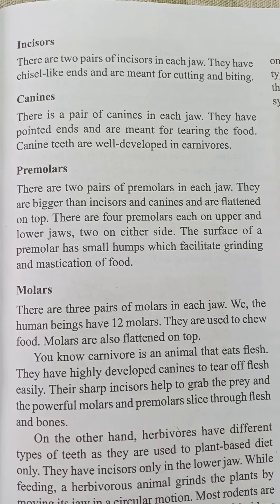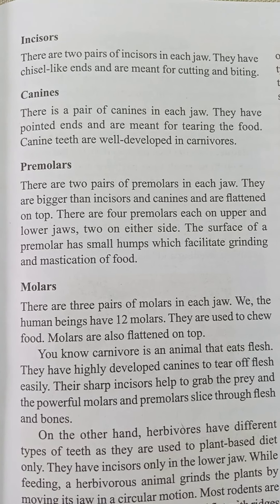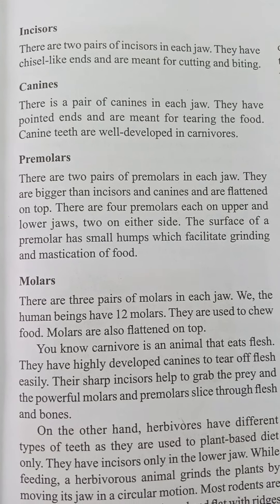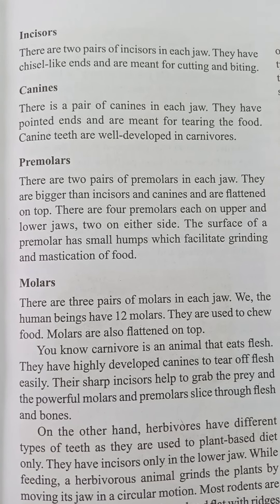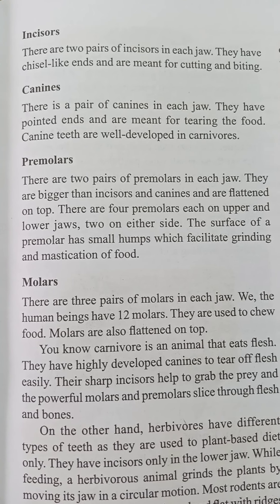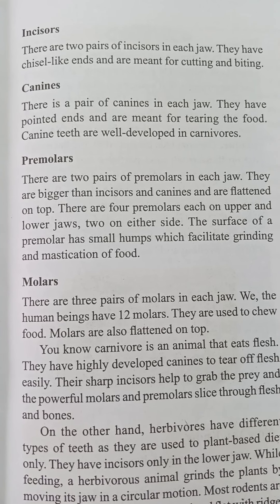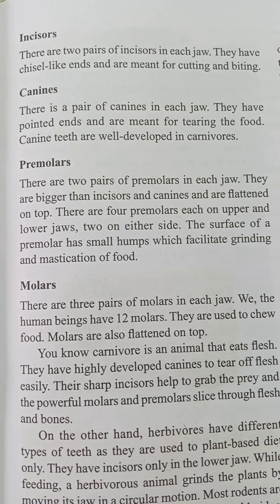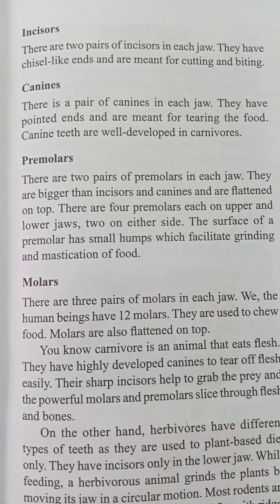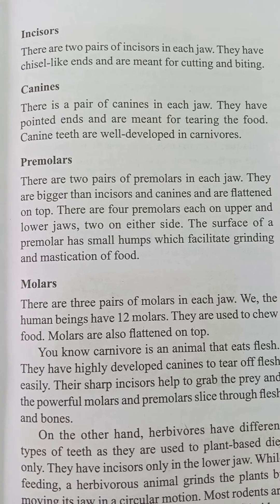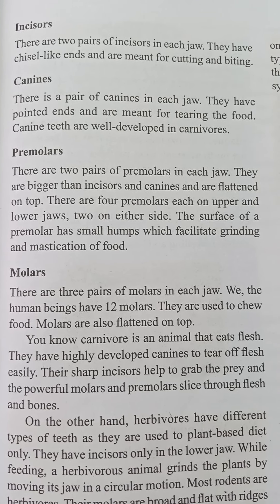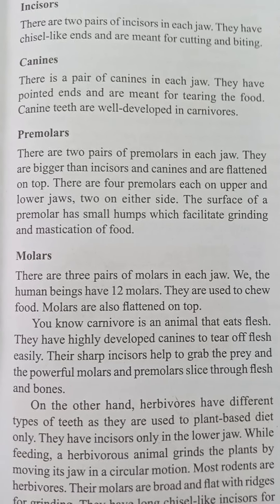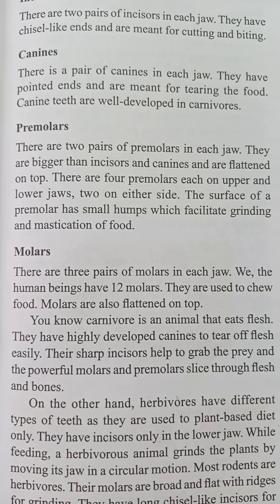Canine: there is a pair of canines in each jaw. They have a pointed end and are meant for the tearing of food. Canine teeth are well developed in carnivores — they are very pointed and sharp.